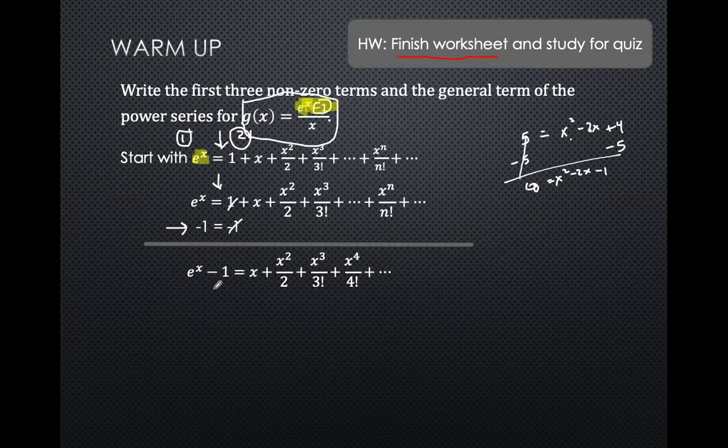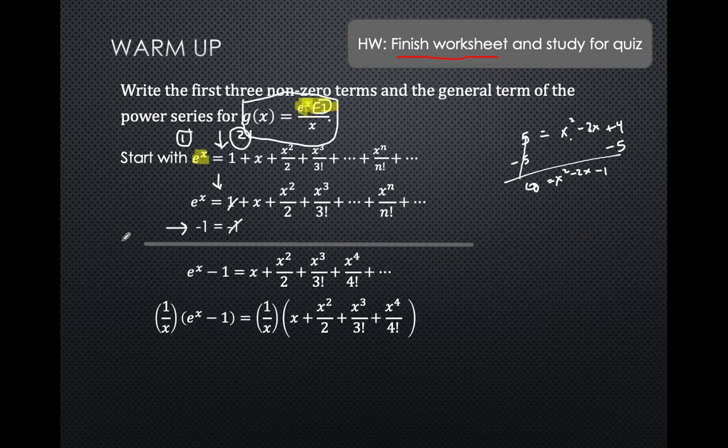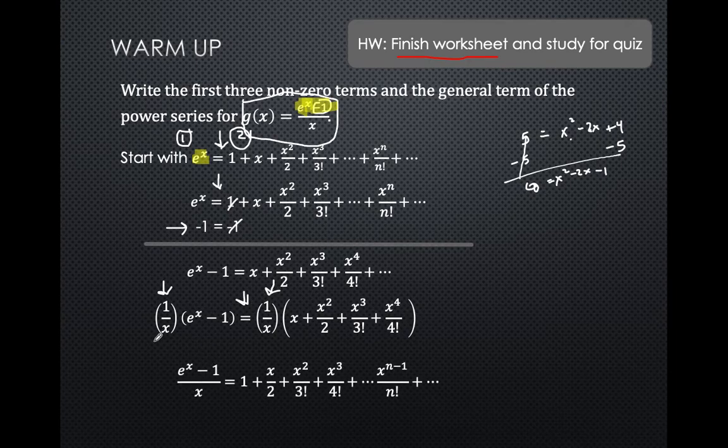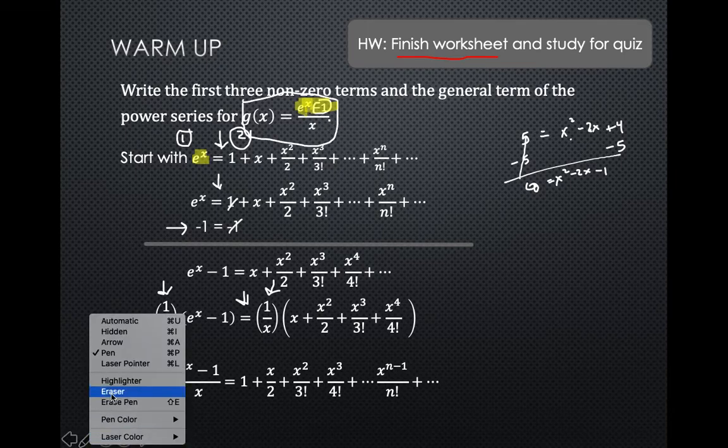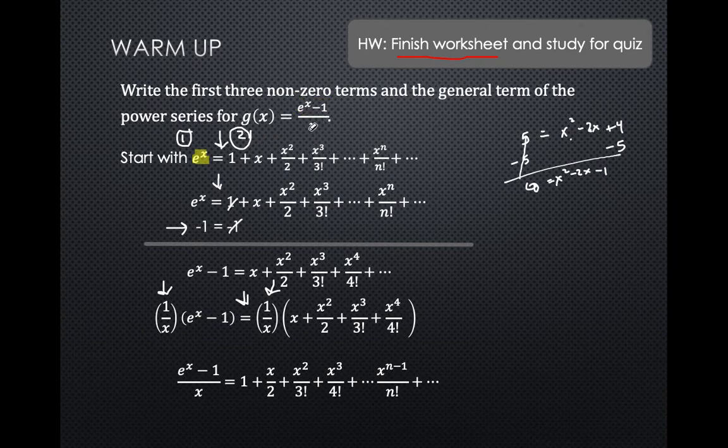So, now I have e^x minus 1, which is the numerator of this. So, I now went from something I memorized or something I can build pretty easily to something that looks almost like what they want, and the only thing I did was subtract 1 from both sides. Well, what's different about what they are asking for and what I have? I'm just going to multiply by 1 over x, but if I'm going to multiply by 1 over x on the left, I have an equation. I need to multiply by 1 over x on the right.